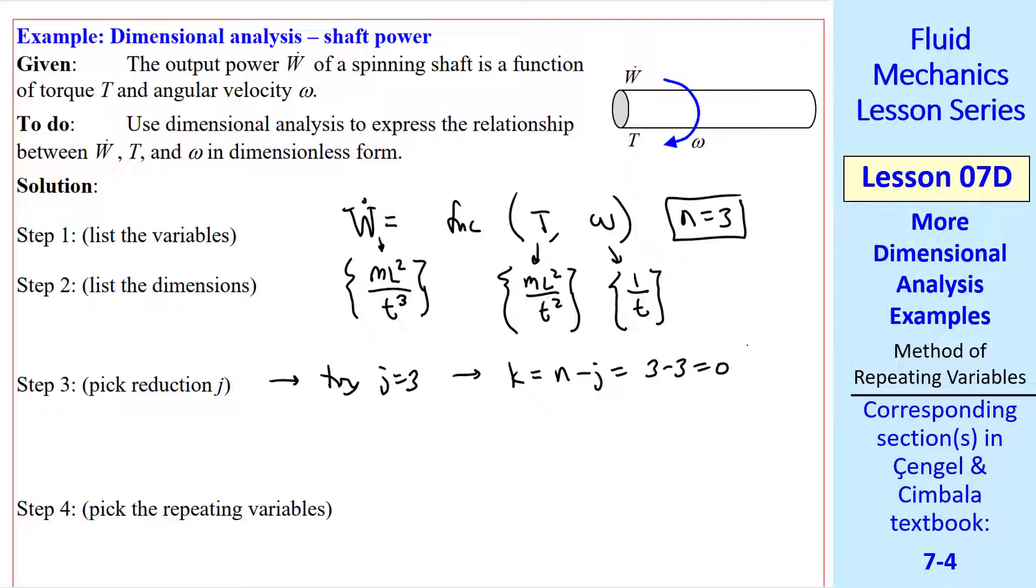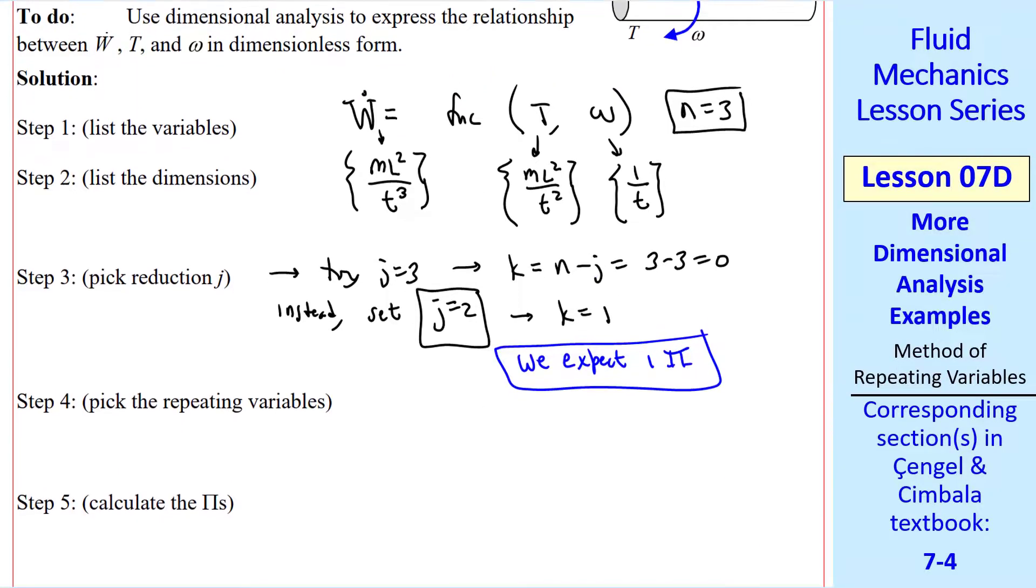Namely, this gives us zero pi's. So we lower j by 1 and try again. When j equal 2, k equal 1, we expect 1 pi. Step 4, pick the repeating variables. We really only have one choice, like in the previous example, since w dot is the dependent parameter. So we pick t and omega, the only two independent variables.